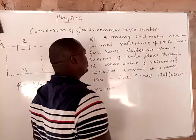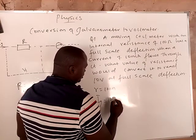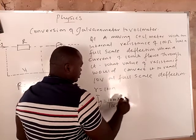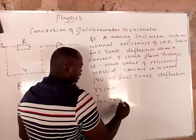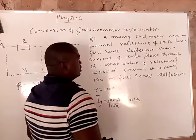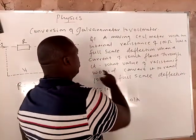So the current of the galvanometer is 10 milliampere. We convert it to ampere by dividing by 1000, and this will give you 0.01 ampere. When a current of 10 milliampere flows through it.